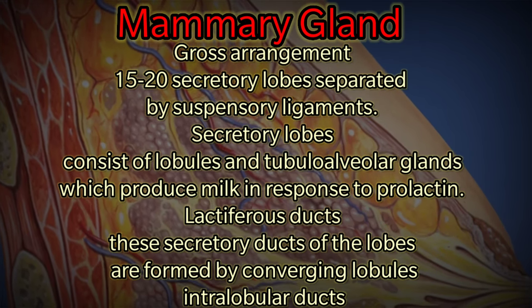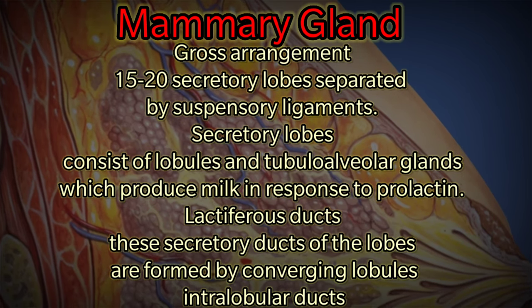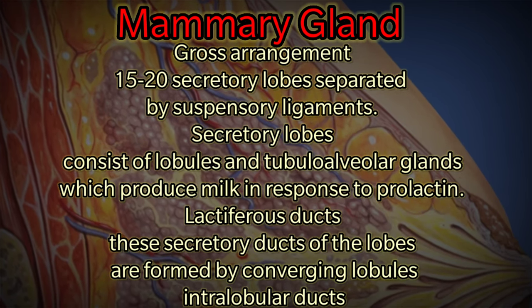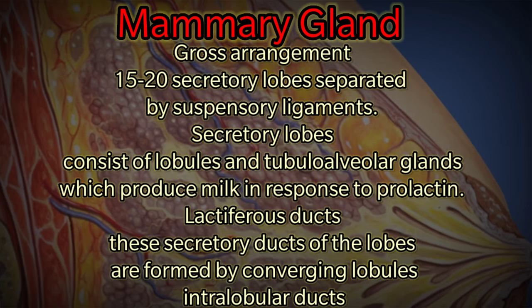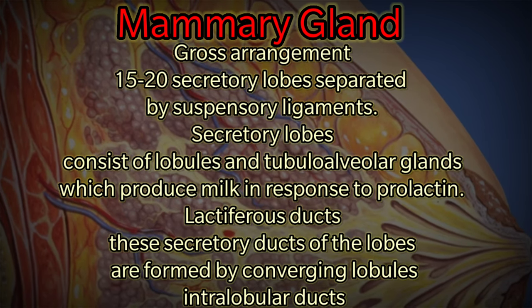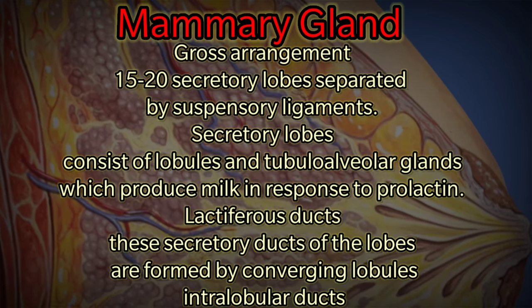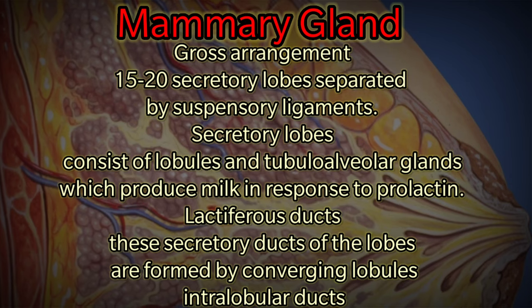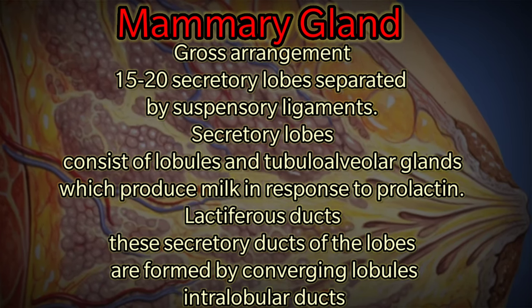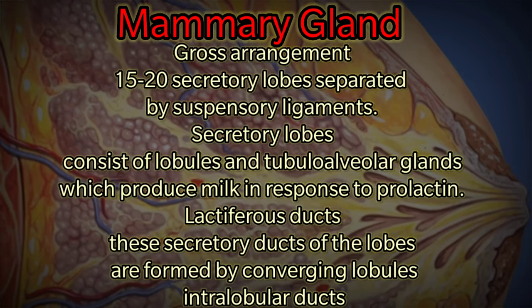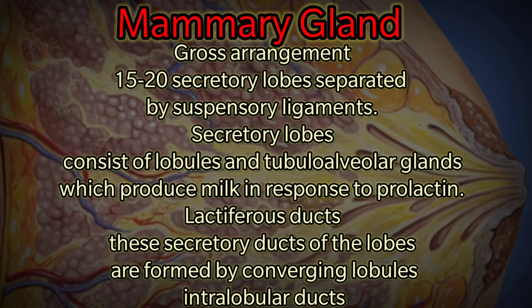There are 15 to 20 secretory lobes separated by suspensory ligaments. Secretory lobes consist of lobules and tubular alveolar glands, which produce milk in response to prolactin. Lactiferous ducts — the secretory ducts of the lobes — are formed by converging lobules and intralobular ducts.